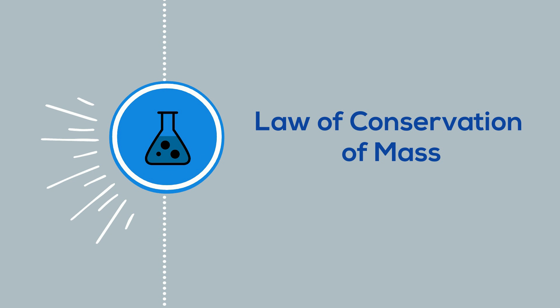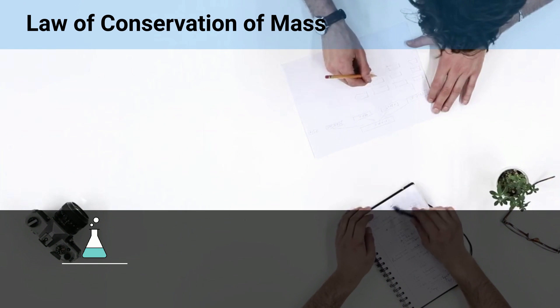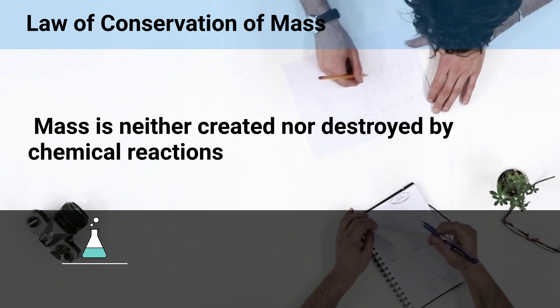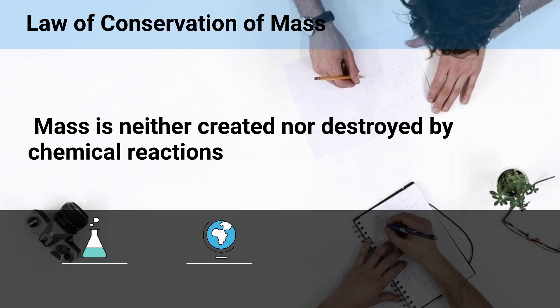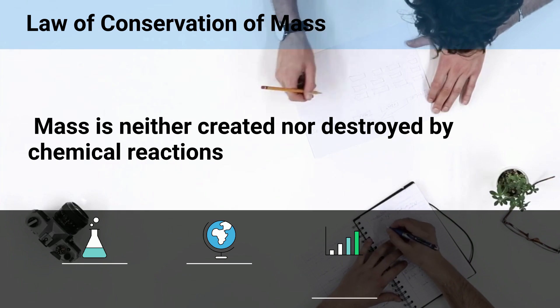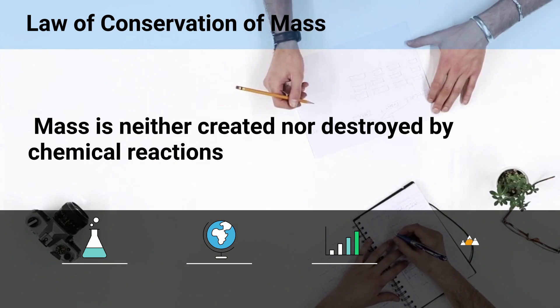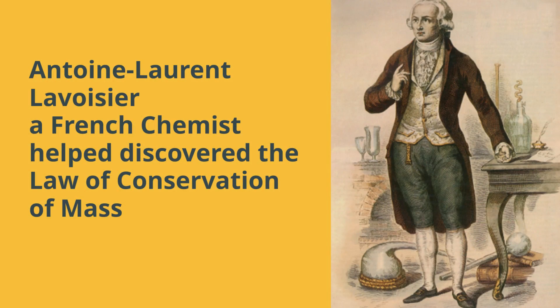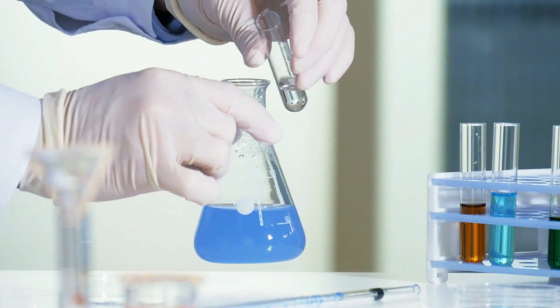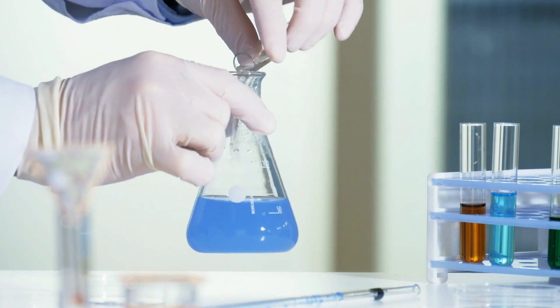The Law of Conservation of Mass states that mass is neither created nor destroyed by chemical reactions. The Law of Conservation of Mass was created in 1789 by a French chemist who discovered that matter cannot be created or destroyed in a chemical reaction.